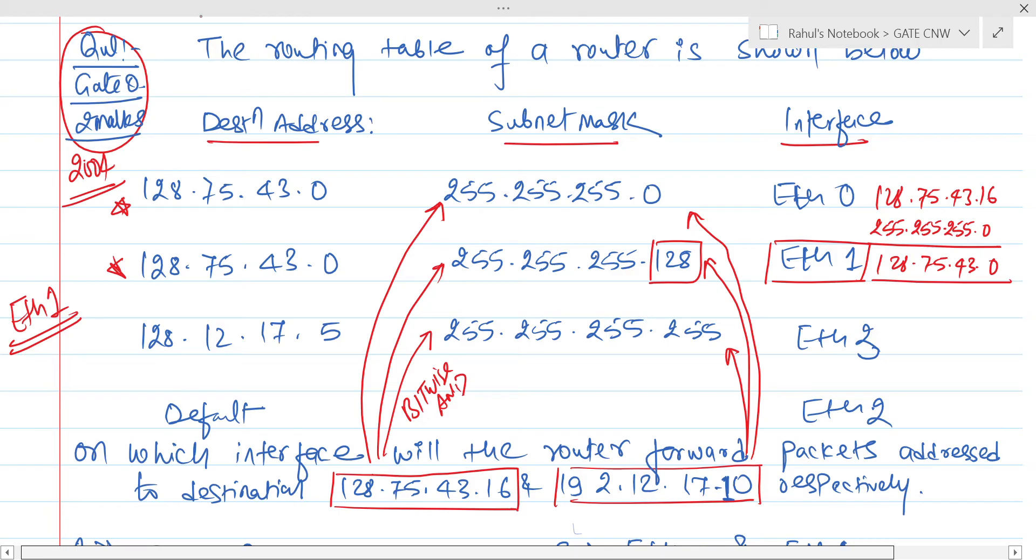Second, if you are going to perform 192.12.17.10 with this IP address, with this IP address and with this IP address, once you are going to get 192.72.17.0, we are not matching here, here, here, nowhere it is matching.